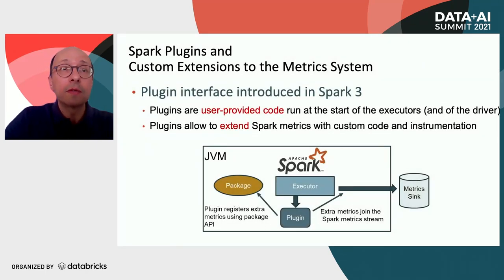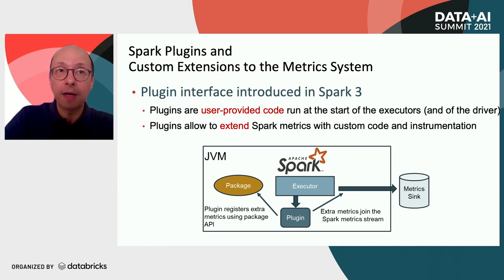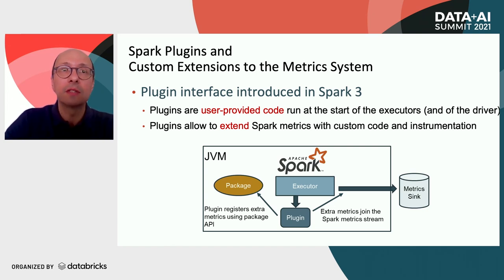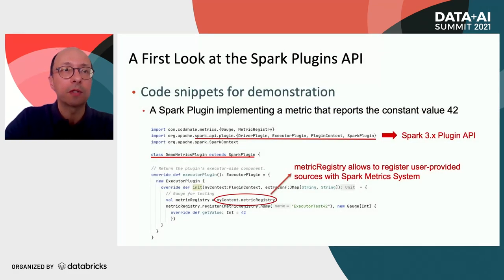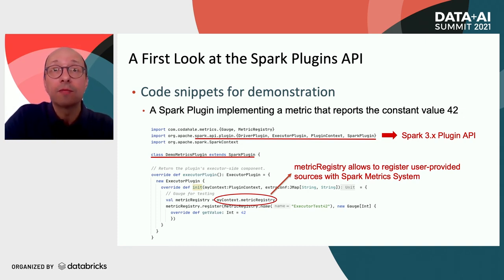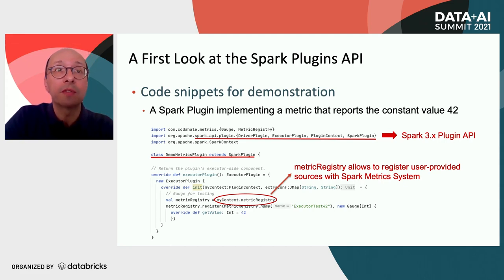This slide provides an overview of Spark plugins in the context of metrics extensions. Plugins allow you to run user-provided code at the start of the executors. The plugin code can interact with external packages and register metrics that will flow towards the sink together with the rest of the Spark metrics, effectively extending the Spark metrics system. This is how the Spark plugin API works — you create a custom class extending SparkPlugin and use the metric registry from the plugin context to register the metrics of interest. In this basic example, the plugin metric simply reports a constant value.